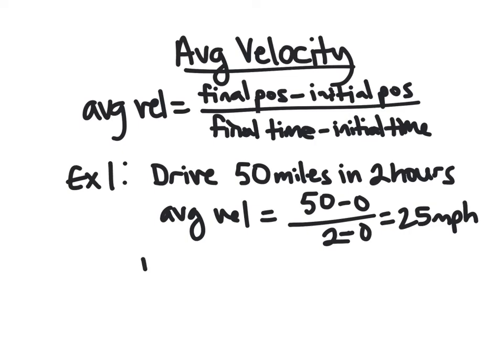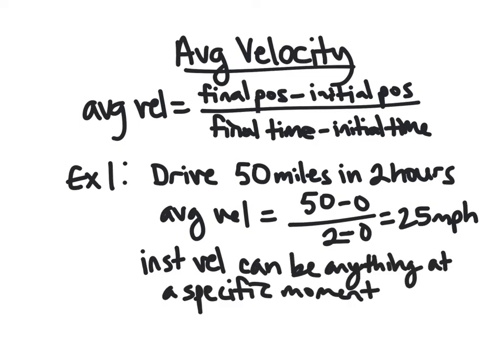But your instantaneous velocity, right? You're probably going very different speeds throughout this, you're not going a consistent 25 miles an hour necessarily. So any given moment, you could be going 80 miles an hour for a bit. And then suddenly you're going zero miles an hour because you're just parked on the highway. So that's one difference between the two.